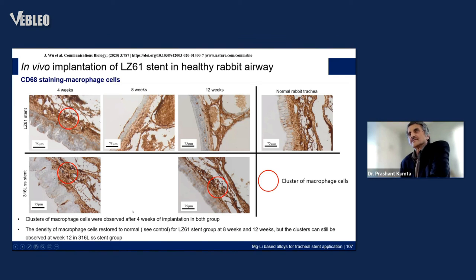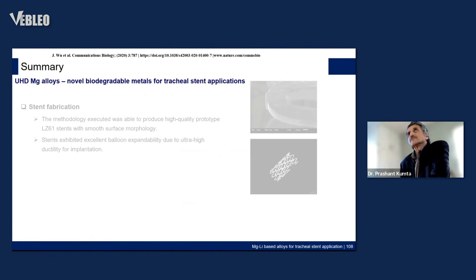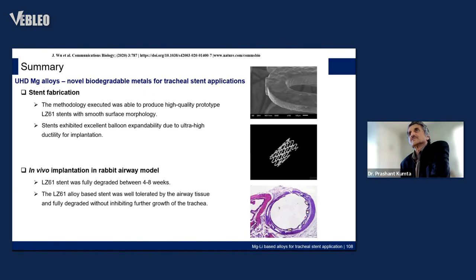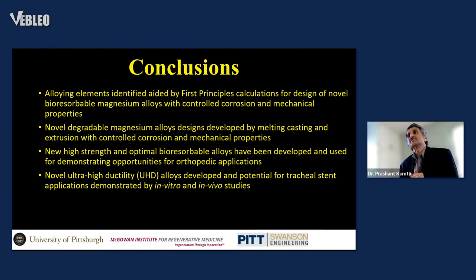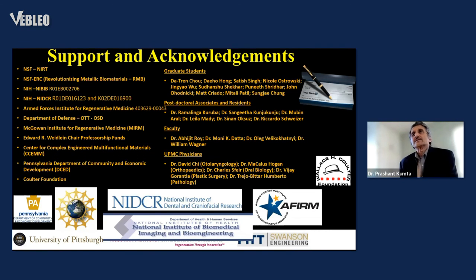In conclusion, we developed novel biodegradable metals for stent fabrication and in vivo implantation in the rabbit airway model for 4 to 12 weeks. The alloy-based stent was well tolerated and fully degraded, inhibiting any further abnormal growth of the trachea. We identified alloying elements using first-principles calculations for novel bioresolvable magnesium alloys exhibiting controlled corrosion and mechanical properties. Alloys were made by melting, casting, and extrusion, showing optimal bioresolvable characteristics with a safe response inside the body and no adverse toxic response. This work was supported over 10 years by NSF, IBCR, the State of Pennsylvania, and BOD.